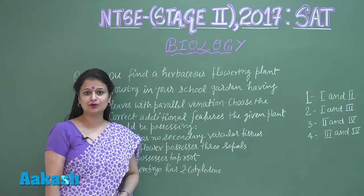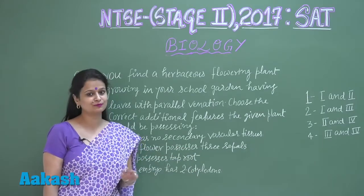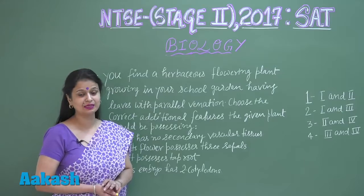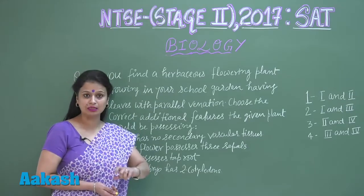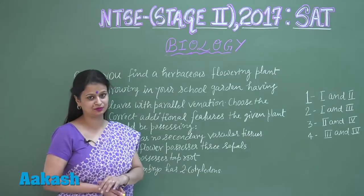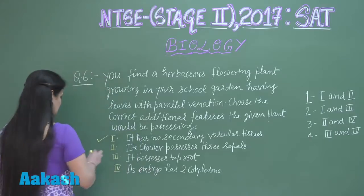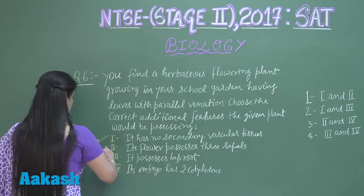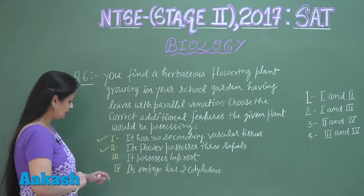The second feature: its flower possesses three sepals. In monocots, the floral parts are three or in multiples of three. So the presence of three floral parts is correct for monocots.